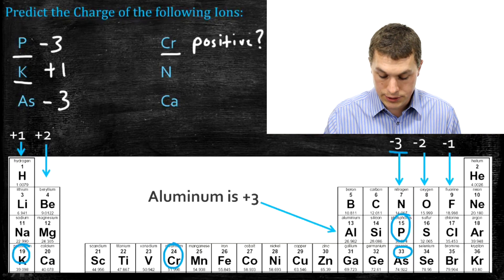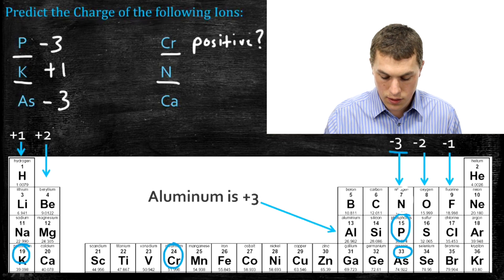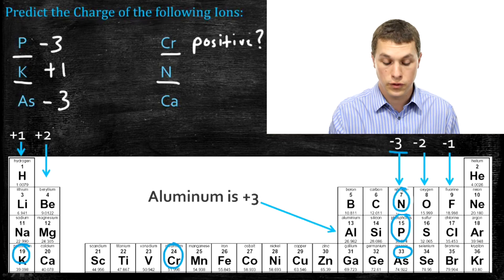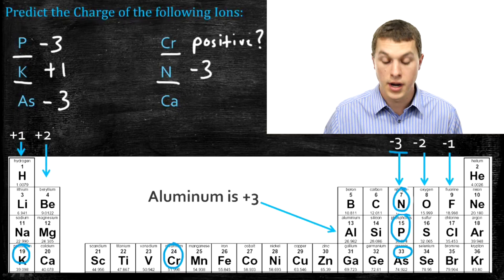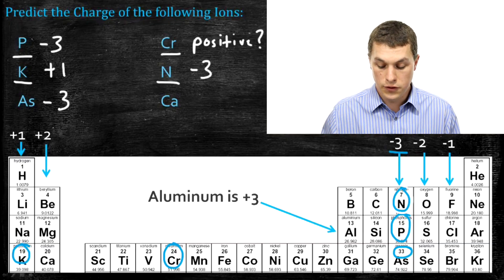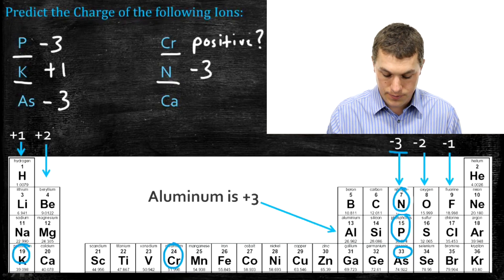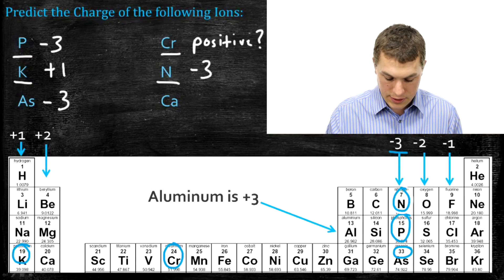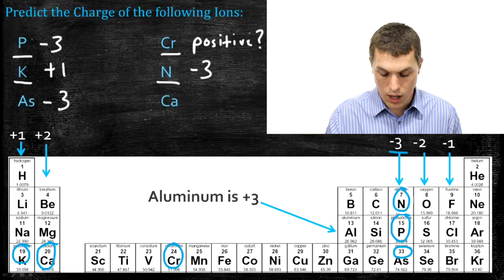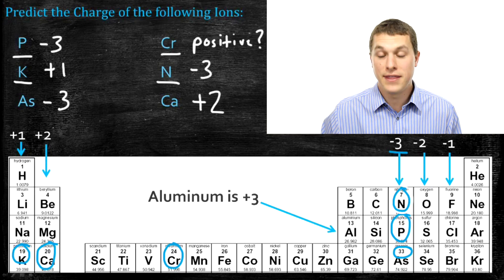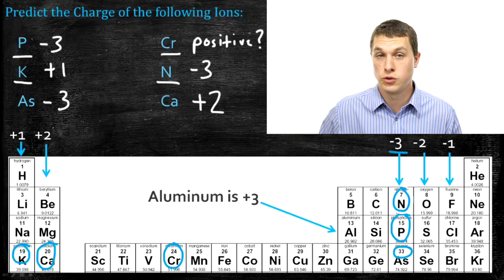Nitrogen is in that same group with arsenic and phosphorus, so it also forms ions with a negative three charge. The key thing is remembering which columns have which charges: the first column is plus one, the second column is plus two, and so forth. Finally, calcium is in the second column, so things in that column tend to form a positive two ion. That's how we can use the position of an element on the periodic table to determine what its charge would be if it becomes an ion.